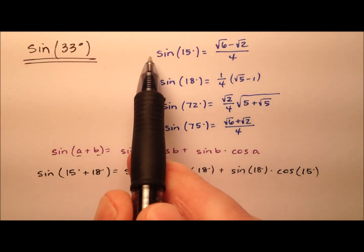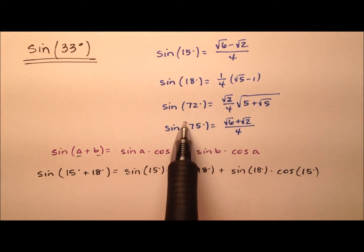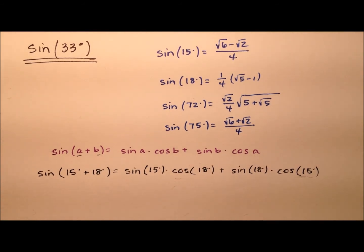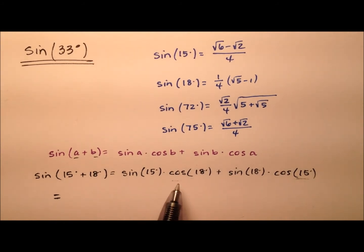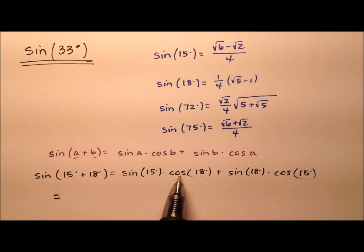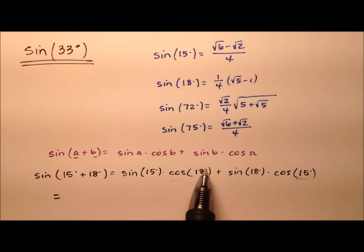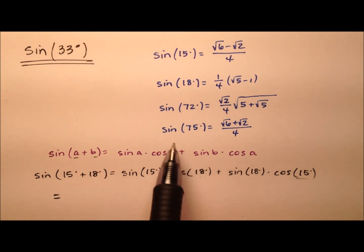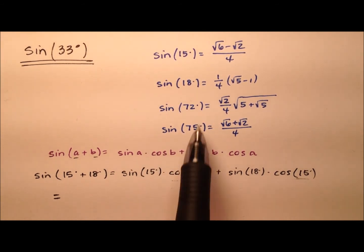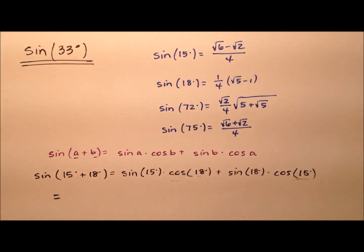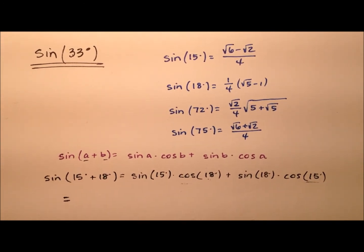The four values I have written are all sine values, but now in my formula I have some cosines. Sine and cosine have a nice relationship where the cosine of one angle, say 18 degrees, is the same as the sine of the complement of that angle. Complementary angles add up to 90 degrees, so the complement of 18 degrees is 90 minus 18, which is 72 degrees. So the cosine of 18 degrees equals the sine of 72 degrees.